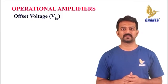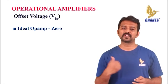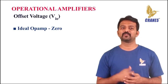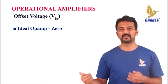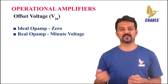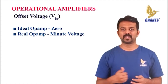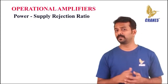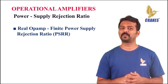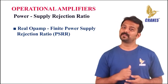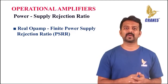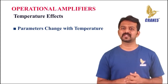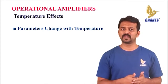The next parameter is offset voltage. The offset voltage of an ideal op-amp is zero, meaning the output voltage will be zero if the difference between the inverting and non-inverting terminals is zero. But in most op-amps, the output will not be exactly zero — there will be a minute voltage. The next characteristic is power supply rejection. Every real operational amplifier has a finite power supply rejection ratio (PSRR), which reflects how well the op-amp can reject changes in its power supply voltage. Also, all parameters change with temperature, and the temperature drift of the input offset voltage is especially important.